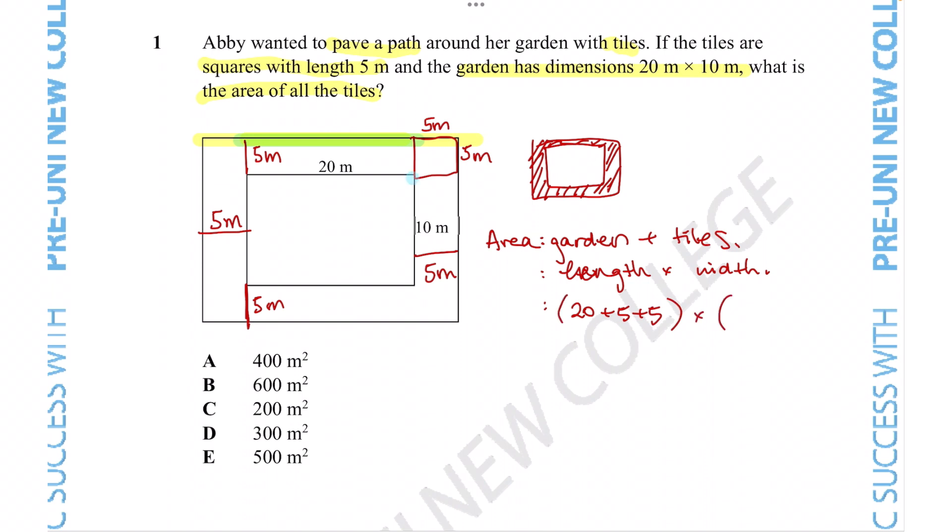So the length is going to be 20 plus 5 plus 5, and the same thing is going to happen to the width. So we've got this length as 10 meters, but we also add two five meter lengths on each side thanks to the tile. So that's going to be 10 plus 5 plus 5. So using the rules of BIDMAS or BODMAS, we know that we need to do whatever's in the brackets first before we do anything else. So 20 plus 5 plus 5 is equal to 30 times by 10 plus 5 plus 5 is equal to 20. So the area of the garden plus the tiles is equal to 600 meters squared.